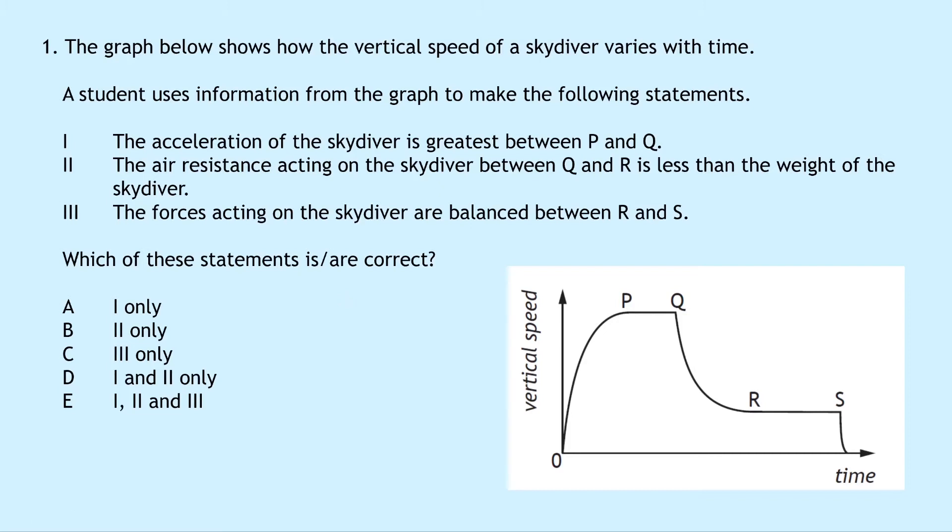So the first statement: the acceleration of the skydiver is greatest between P and Q. Well, if you notice on the speed time graph between P and Q we've got a straight horizontal line which means a constant vertical speed. So the acceleration there is not going to be greatest between P and Q because that is actually just a constant speed. The greatest acceleration will be at this point here where the skydiver has just jumped out of the plane and he's accelerating to begin with. So this would be the largest acceleration at this point. So that one's got to be false.